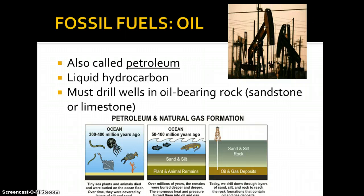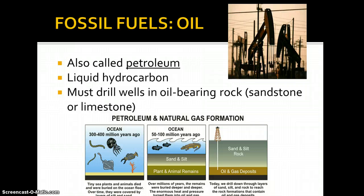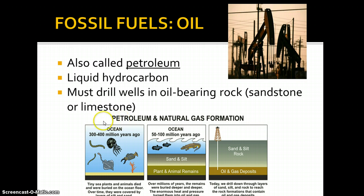I'm going to continue the fossil fuel discussion with oil, then natural gas, and then we're going to talk about uranium. Oil is also called petroleum. It's a liquid hydrocarbon — just like coal was a solid hydrocarbon — meaning it has hydrogen and carbon in it. We must drill wells into the oil-bearing rock, which usually is sandstone or limestone or salt and clay. Petroleum comes from ancient ocean or wetland areas, with 300 to 400 million-year-old organisms.